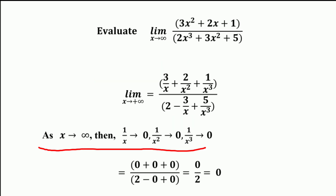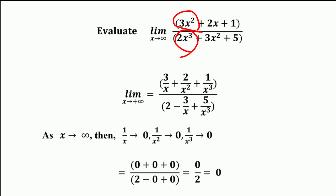As x approaches to infinity, then 1/x, 1/x², and 1/x³ all approach 0. Substituting these values, it becomes (0 + 0 + 0) / (2 - 0 + 0), which equals 0/2 = 0. In this case, the highest degree in the numerator is less than the highest degree of the denominator, so the limit to infinity is 0.